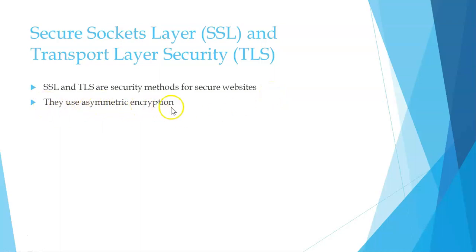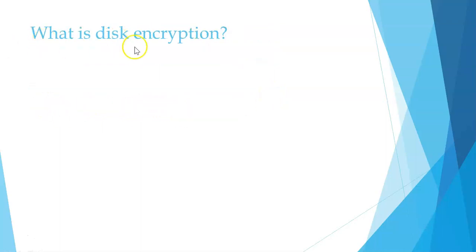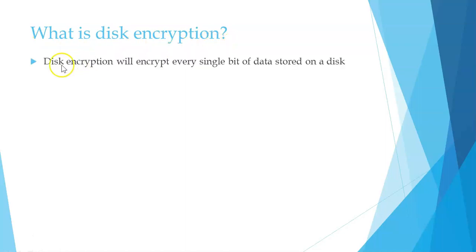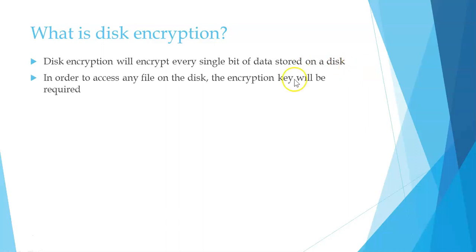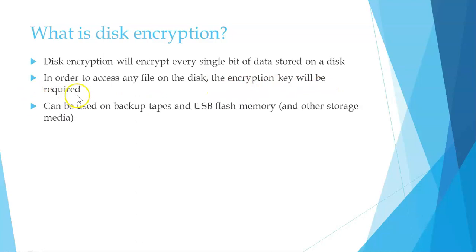They use asymmetric encryption. What is disk encryption? Disk encryption will encrypt every single bit of data stored on a disk. In order to access any file on the disk, the encryption key will be required. It can be used on backup tapes and USB flash memory and other storage media.